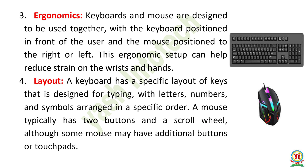Four, layout — a keyboard has a specific layout of keys designed for typing, with letters, numbers, and symbols arranged in a specific order. A mouse typically has two buttons and a scroll wheel, although some mice may have additional buttons or touch pads.